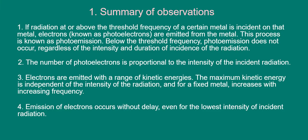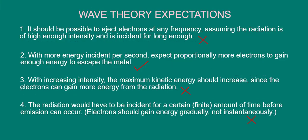Recall that these observations, specifically numbers 1, 3, and 4, were puzzling to physicists, since they clash with what the wave theory of light predicts. To recap, the expectations of wave theory are as shown, with crosses next to numbers 1, 3, and 4, which are at odds with observations.